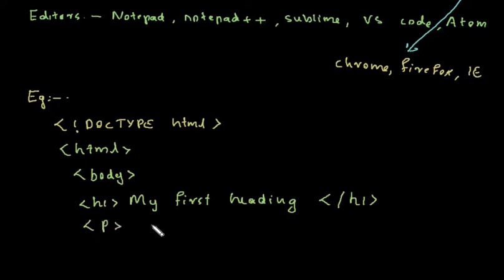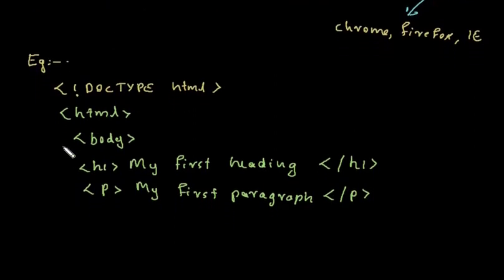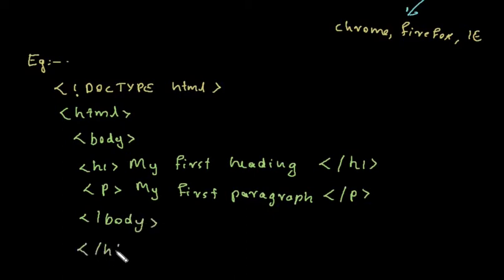Inside the HTML tag, we have the body tag. Within the body, we use H1 for 'My First Heading' — closing with a slash and H1. Then P, which stands for paragraph, containing 'My First Paragraph', followed by a closing paragraph tag. Then we close the body tag and the HTML tag.